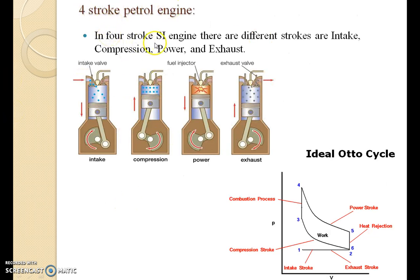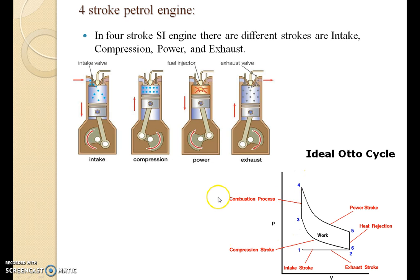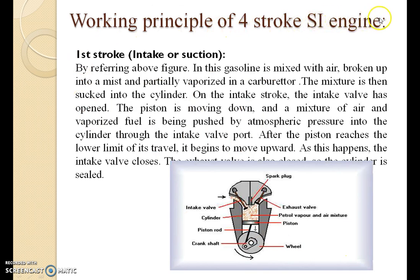4-stroke petrol engine. In the 4-stroke SI engine, there are different strokes: intake, compression, power, and exhaust. All these are the diagrams of each stroke. This is the diagram for intake stroke, this is the diagram for compression stroke, this is the diagram for power stroke, and this is the diagram for exhaust stroke. This is the working cycle of the 4-stroke engine: from 1-2 intake stroke, from 2-3 compression stroke, from 3-4 combustion stroke, from 4-5 power stroke, from 5-6 heat rejection, and from 2-1 exhaust stroke.